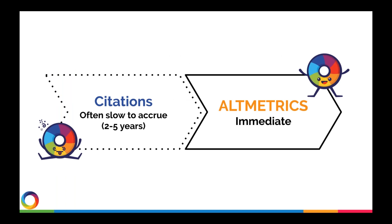A big difference between Altmetrics and citation-based metrics is the time factor. Citations can take two to five years to start accruing on published papers, whereas Altmetrics offer immediate attention — if you publish a paper today, you can already see Twitter and news attention the same day or the next day. This is especially great for early career researchers, because it takes a very long time for research to be conducted and published, making it hard to demonstrate impact on a CV.